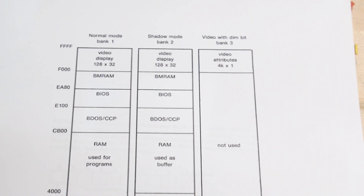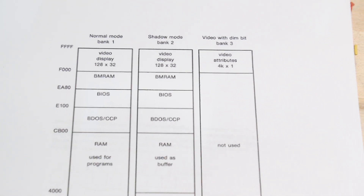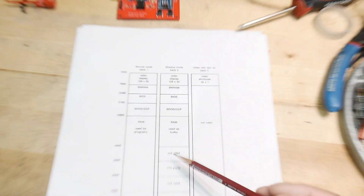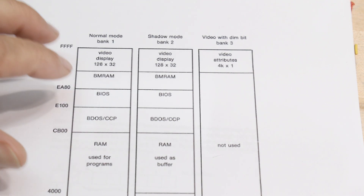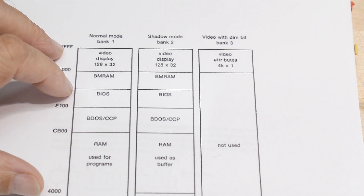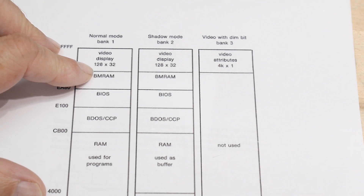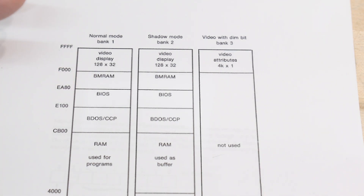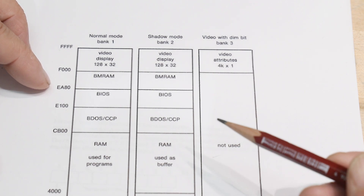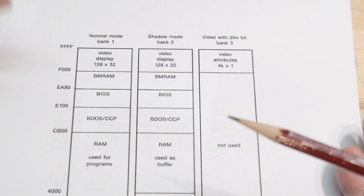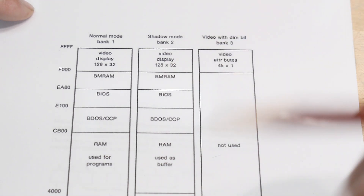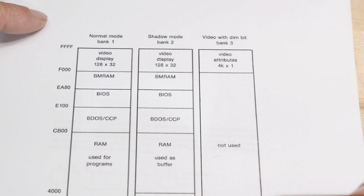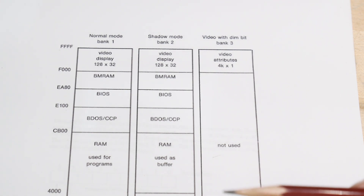I want to talk about the Osborne 1 memory mapping. It has a strange memory mapping — 64K of memory mapped into three banks. The bank switching is done with a Z80 instruction. When they wrote the code for the Osborne, I've been told the only Z80 instruction they ever used was for bank switching, and everything else was written in 8080 code. I never learned Z80 mnemonics either — I always programmed an 8080 or 8085.